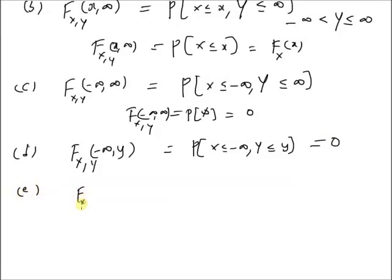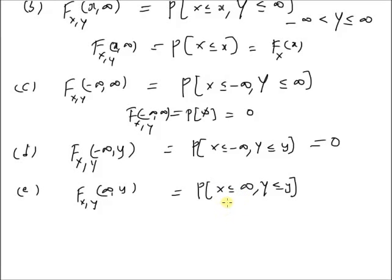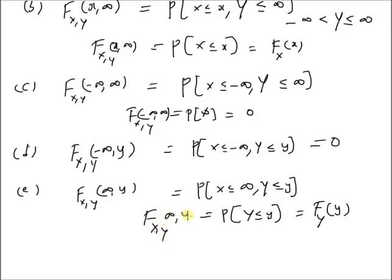Finally, we look at F(x,y) of plus infinity comma y. This is equal to the probability that X is less than or equal to plus infinity and Y is less than or equal to small y. Here, we are dealing with the full sample space of X, meaning X can take any value on the real line. So this is equivalent to the probability that Y is less than or equal to small y. Therefore, this equals the marginal CDF of Y, F_y of y.